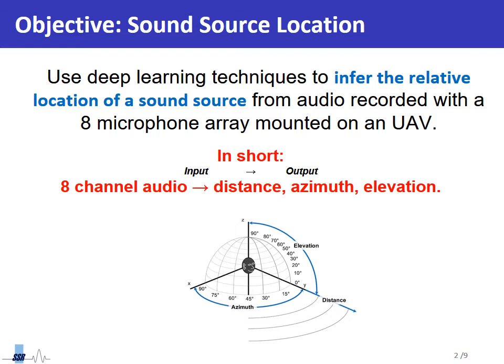A sound source location problem consists in determining the relative location of an interest sound source given a recording where the sound is present. This recording usually has several channels; in our case it is an 8-channel audio. From this 8-channel audio we want to infer both the distance and the direction of arrival of the source with respect to the recorder position. This direction of arrival information can be decomposed between the azimuth value and the elevation value. In our case we are going to solve this problem using deep learning and regarding a drone use case.